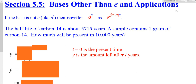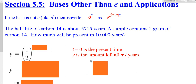We're going to look at integrating and differentiating things that are not base e, and briefly review how to solve things that are not base e. For this problem, we have a half-life starting with one gram. It's a half-life, so in our parentheses we have a half. We're dealing with a half-life of carbon-14, meaning after 5,715 years only half of the carbon-14 is remaining. So we're wondering how much will be left after 10,000 years.